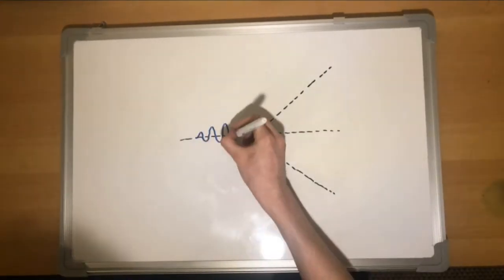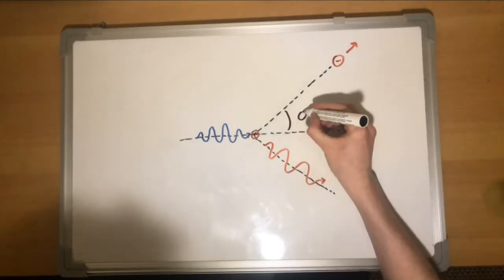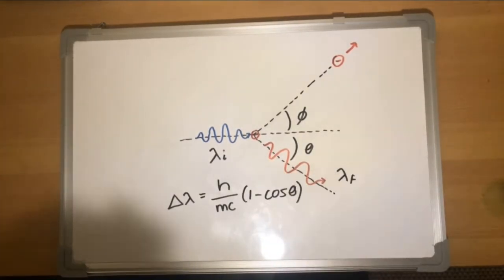For context, Compton scattering is the effect by which photons are scattered by charged particles, resulting in the loss of energy.